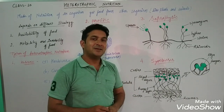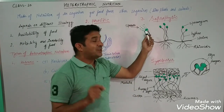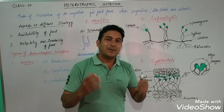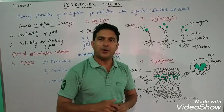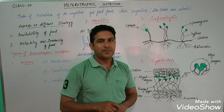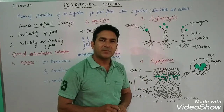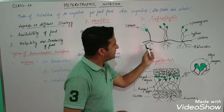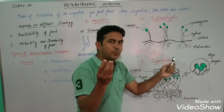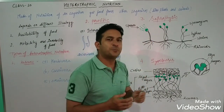Next, we will discuss saprophytic mode of nutrition. Keep fungi in mind — fungi follow the saprophytic mode of nutrition. The specialty of saprophytes is that they digest food outside the body first, and then absorb the digested nutrients. Here you can see the microscopic structure of bread mold, with rhizoids, stolon, hyphae, sporangium, and spore formation in the sporangium, with spores spreading out.